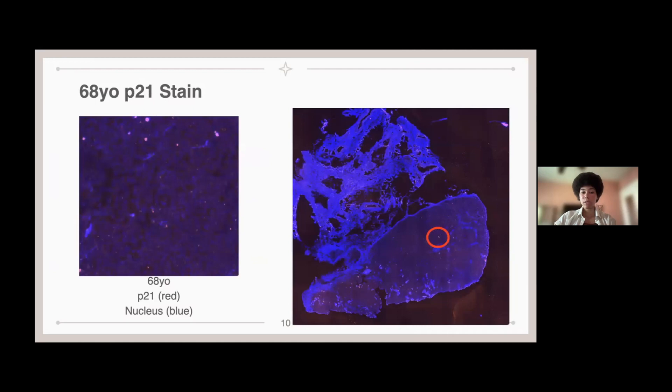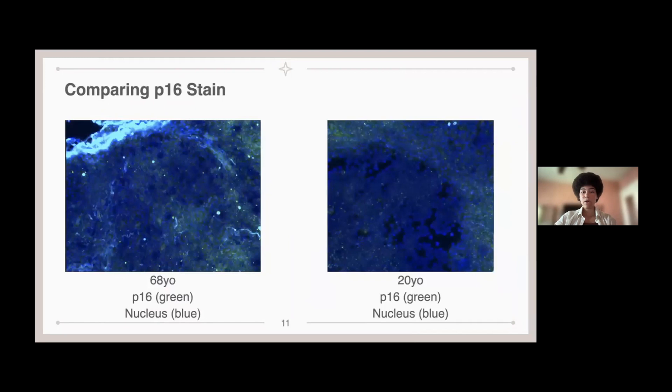Similarly, this is the P21 stain for the 68-year-old. Again, there are a lot more red dots exhibited in this stain indicating the increase of P21.